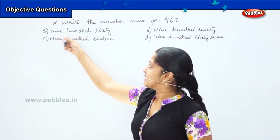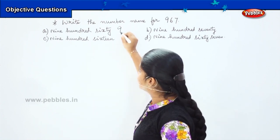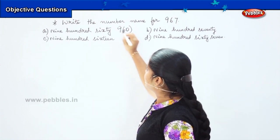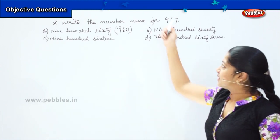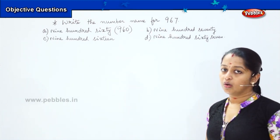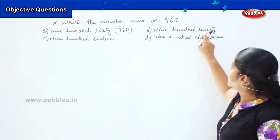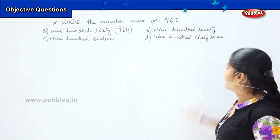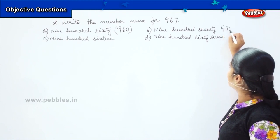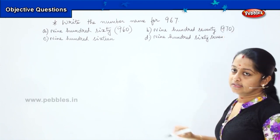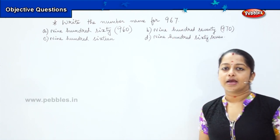The first option says 960. How will you write that? We will write it as 960. Is it matching with our question? No. We will move to the next option, which is 970. How will you write that? We will write it as 970. This option is also not matching with the question.